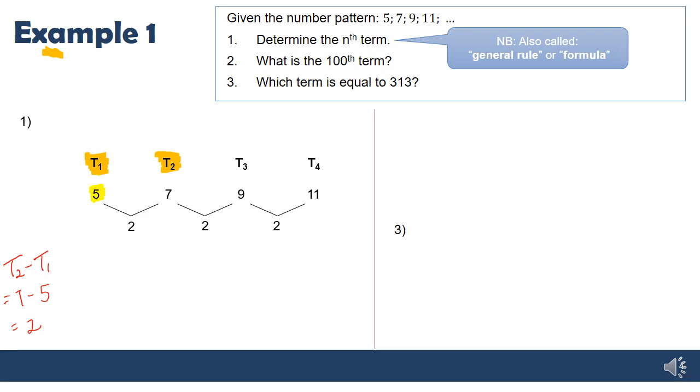Now we generate our general rule starting with T_n. I take my constant difference, which is 2, and multiply it by my position number n. But if we did that, 2 times position 1 would give 2, but I want 5. Let's carry on and see what we would get for the other terms.